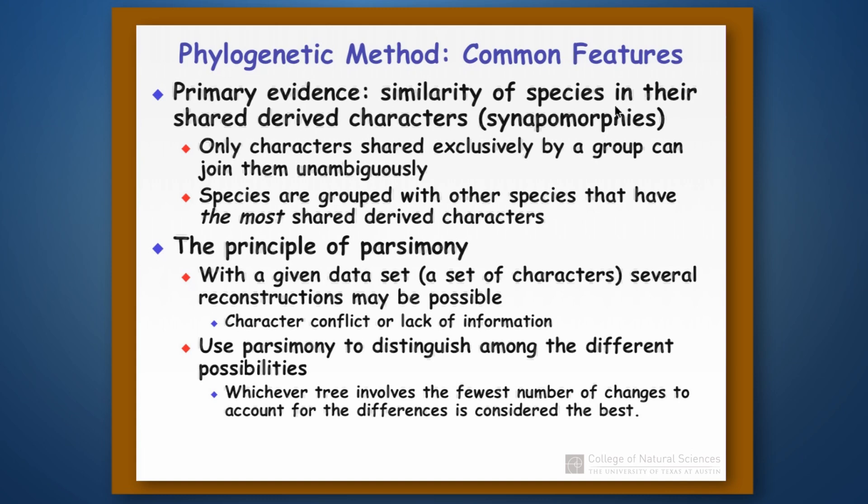In other words, where do we minimize the number of conflicts? And once we do that, we can then say this is our best tree because we're minimizing the number of conflicts in our data set.